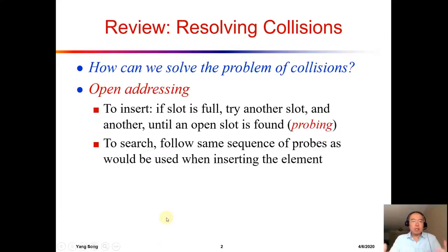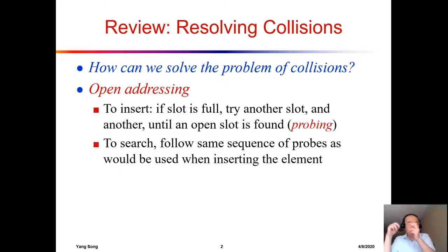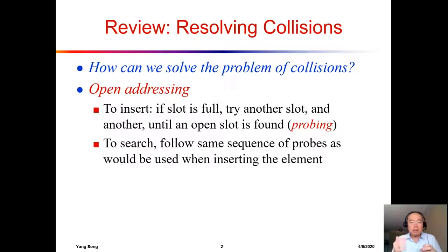The very first way to solve collisions is open addressing, another name for which is probing. This means if we want to send a key to a specific slot in the hash table and that slot has already been taken, we move down and check the next slot. If that has been taken, we keep checking down until we find an open slot. This is called linear probing, and it is probably the easiest probing we can do.